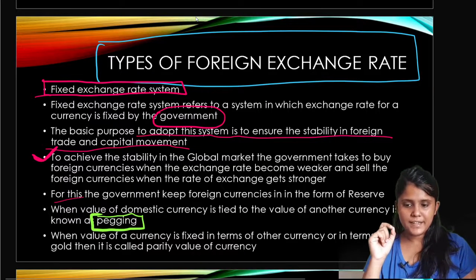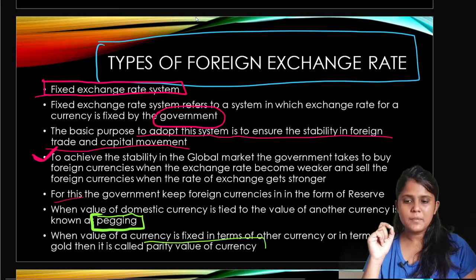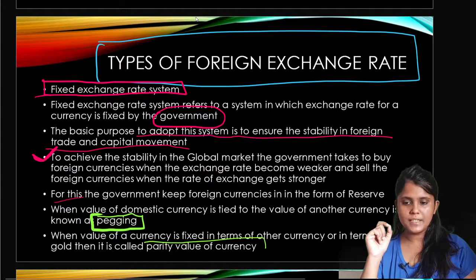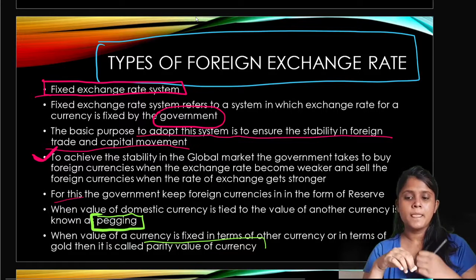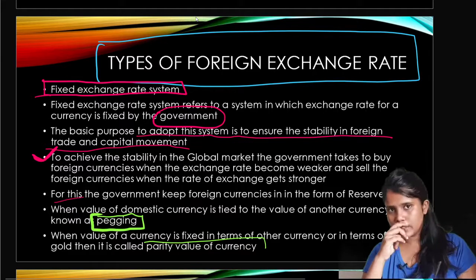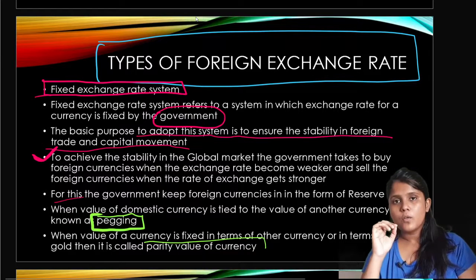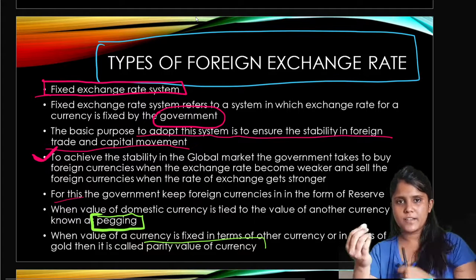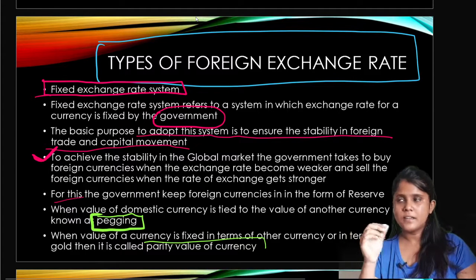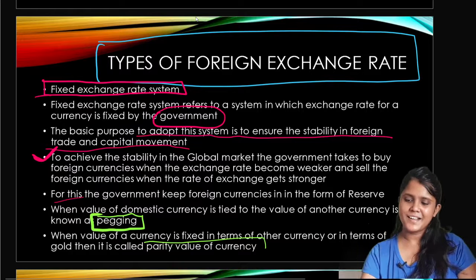When we link our domestic currency to some foreign currency, we call it pegging. The second term is parity value. Parity value is when a currency is fixed in terms of another currency or in terms of gold; we call that the parity value of the currency.